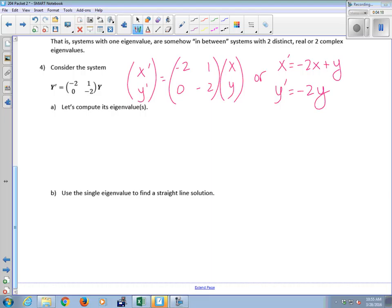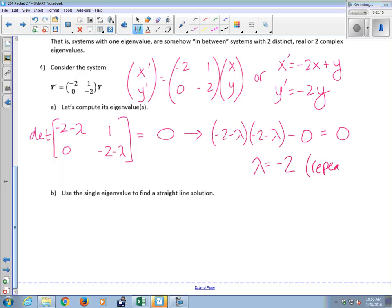We want to solve det(A - λI) = 0. My A is the matrix negative 2, 1, 0, negative 2. A minus λI is negative 2 minus lambda, 1, 0, negative 2 minus lambda. Take the determinant and set it equal to 0. This becomes (negative 2 minus lambda) times (negative 2 minus lambda) minus 0 equals 0. You end up with lambda equals negative 2 as your only solution. We call that a repeated eigenvalue.